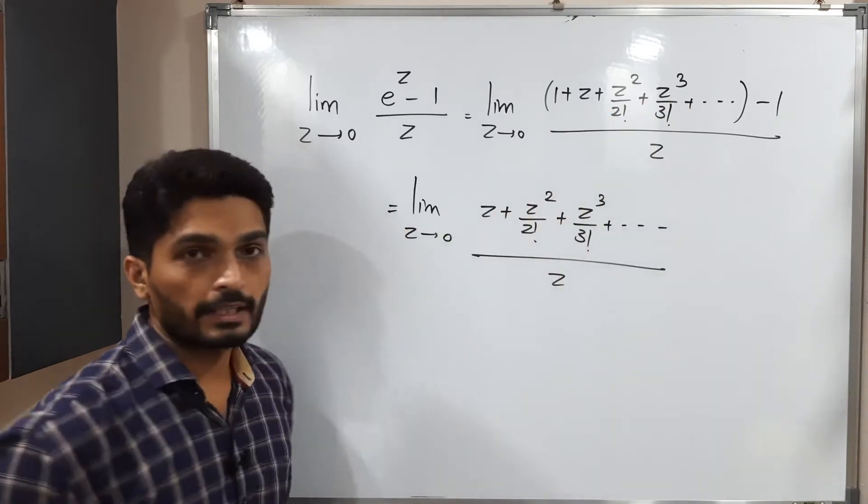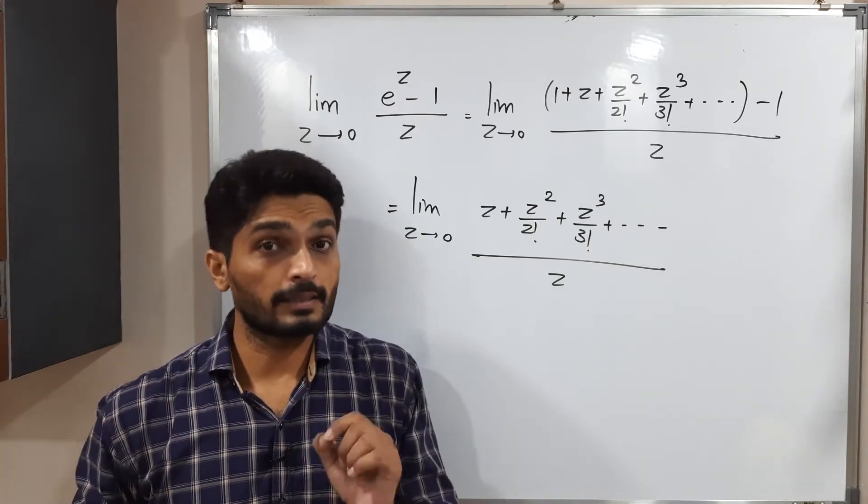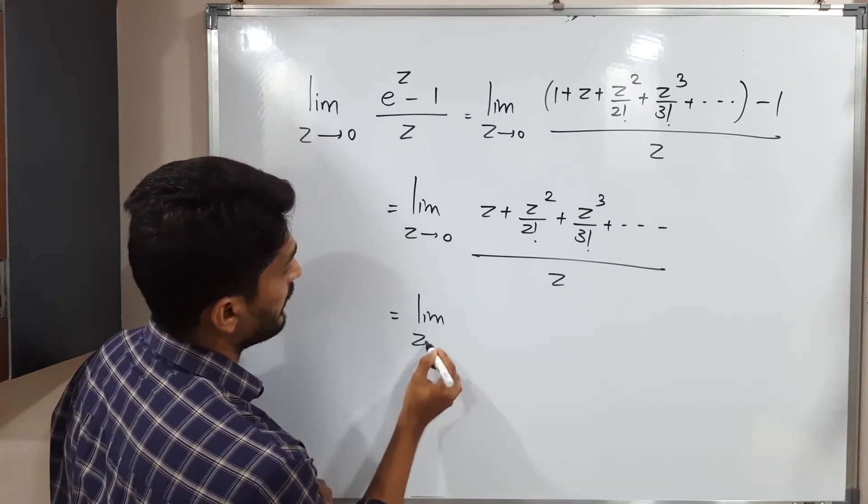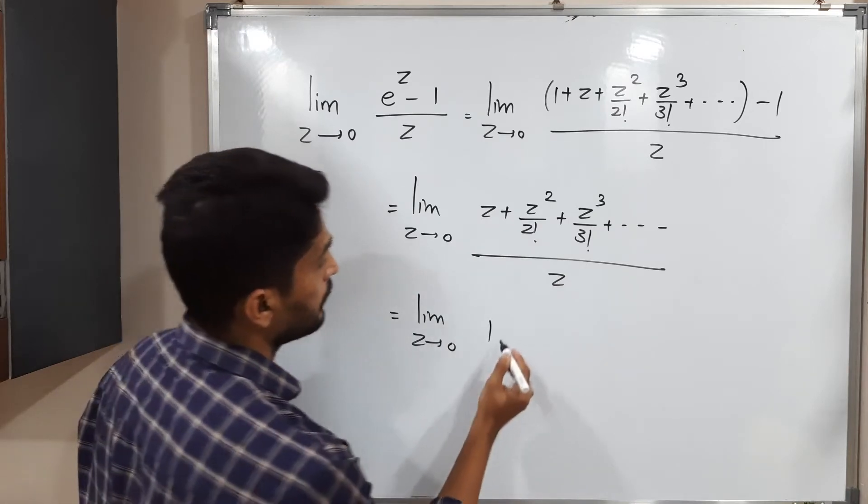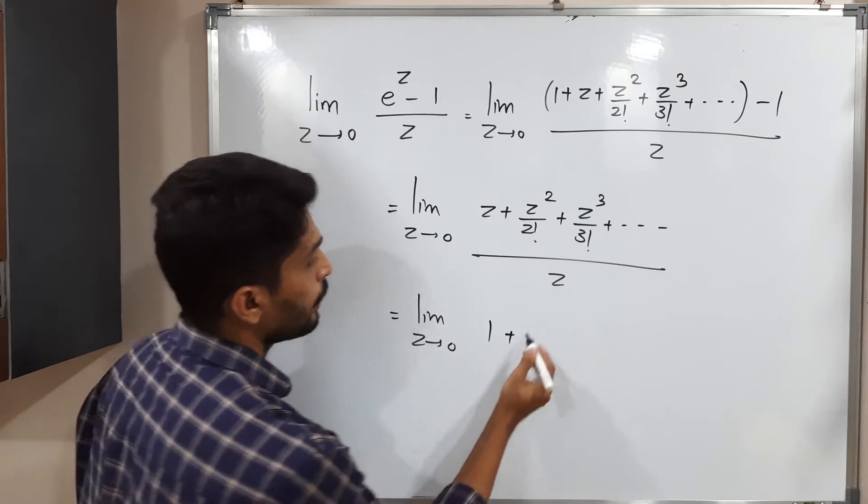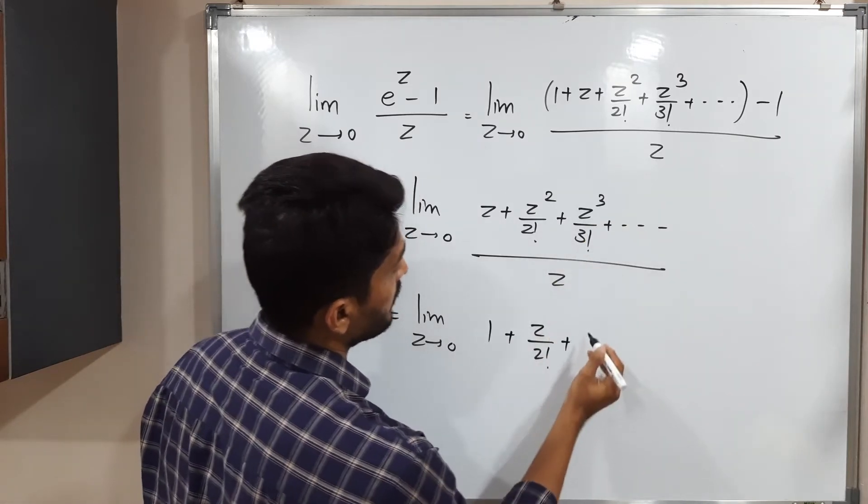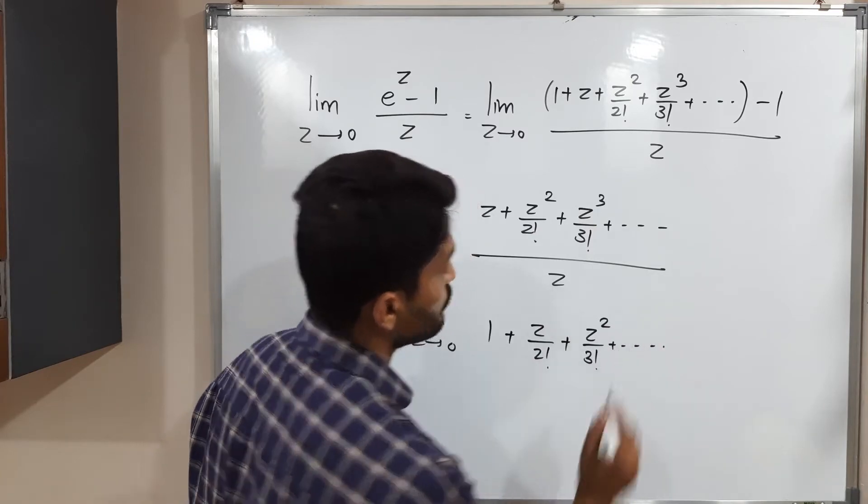See for each term we can divide separately by this z. So what will happen? Definitely z will get cancelled. z upon z will get cancelled. We will have 1 plus if you divide second term by z, 1 z will cancel, 1 z will be there. Plus if you divide third term by z, z will be cancelled, z square by 3 factorial and so on.